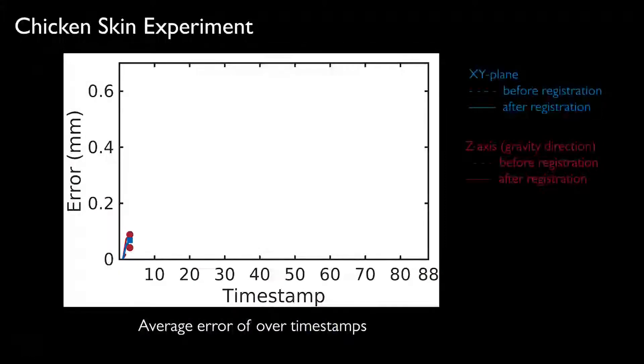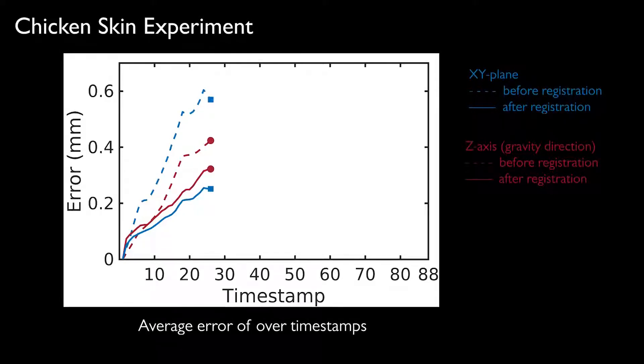The quantitative comparison before and after our real-to-sim registration also supports our observation. The averaged registration errors for all surface particles are computed over time steps. The errors both in the x-y plane and the z-direction, which is the gravity direction,